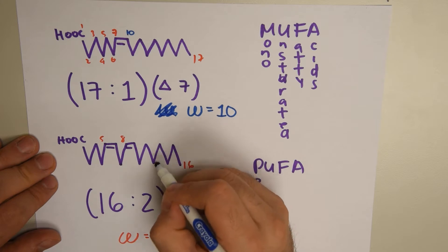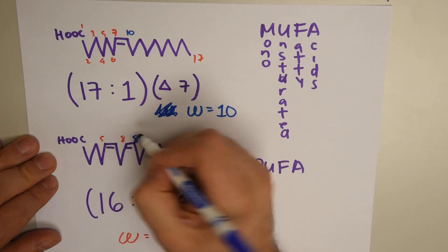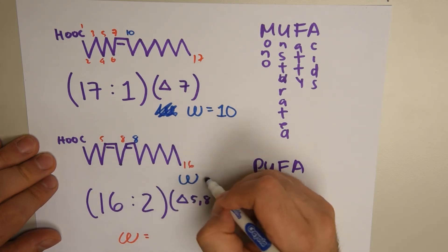We only count the first double bond we encounter. So let's look at the omega for this one: 1, 2, 3, 4, 5, 6, 7, 8. This would be an omega-8 acid.